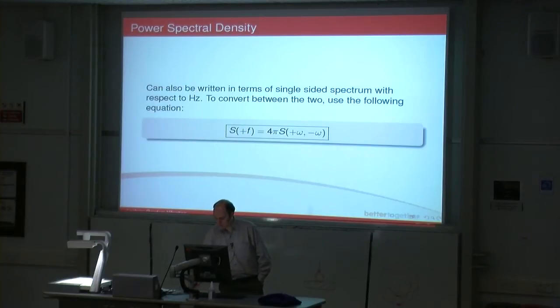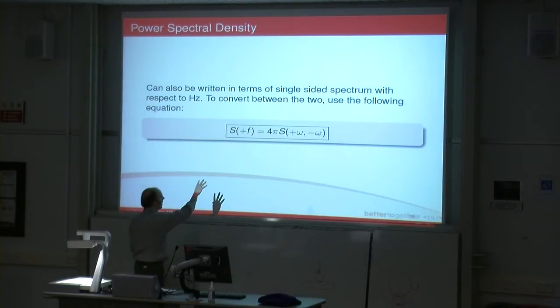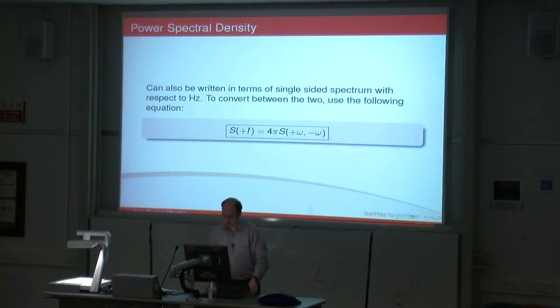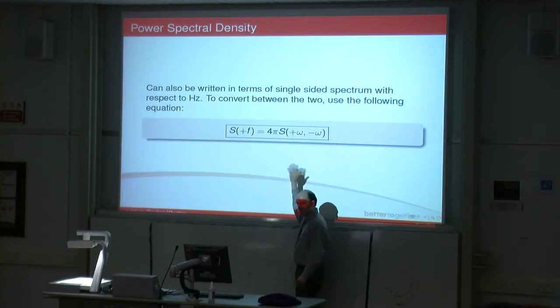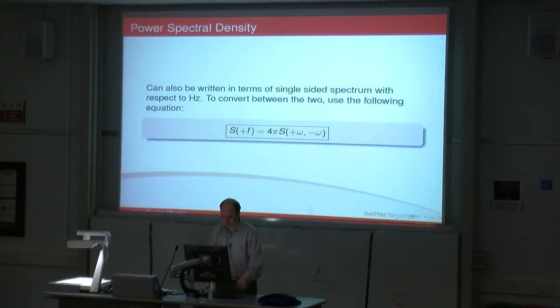You can also write it in terms of a single-sided spectrum in terms of hertz. There's a relationship between S of F, which is in terms of hertz, and S of omega. You basically multiply the version in terms of radians per second by 4π, and you get the single-sided spectrum in terms of frequency. What might happen is you're given this information and you need to work out what it is in terms of omega, so you can divide by 4π.